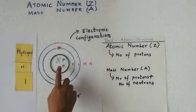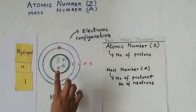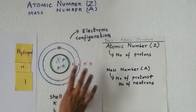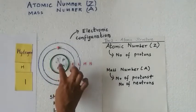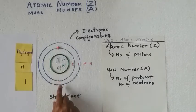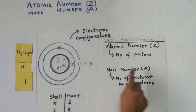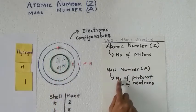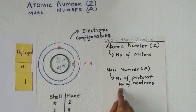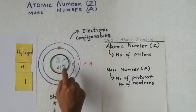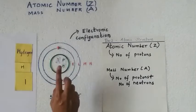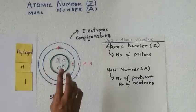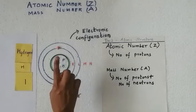Hydrogen is the only element that has no neutrons — it does not have any neutrally charged particle in the nucleus. The mass number, given by the symbol A, is the number of protons plus the number of neutrons. Here in hydrogen we have no neutrons, so the mass number is 1 plus 0, which equals 1. Hydrogen has both atomic number and mass number equal to 1.